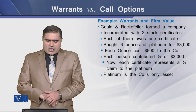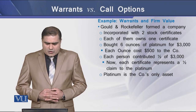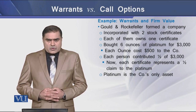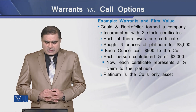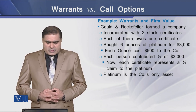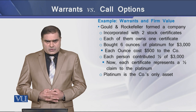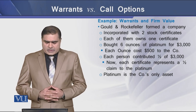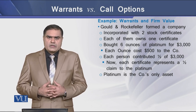Let's see an example of how warrants affect firm value. Two partners, Gold and Rockefeller, formed a company with two stock certificates, each holding one certificate as proof of ownership. They bought six ounces of platinum for $3,000, meaning each ounce cost the firm $500. Each person contributed half of $3,000, so each certificate represents a one-half claim to the platinum, which is the only asset of this newly formed company.